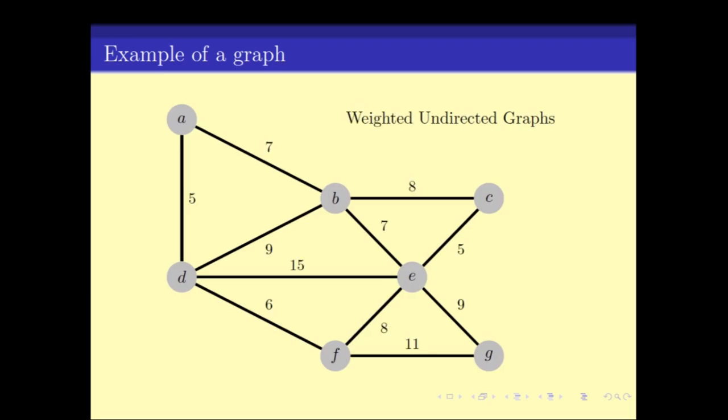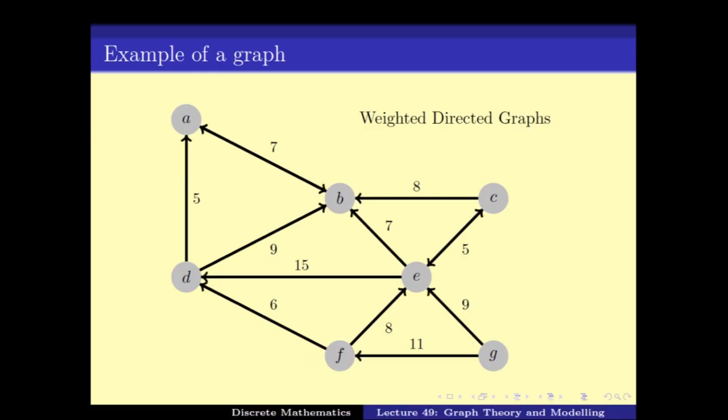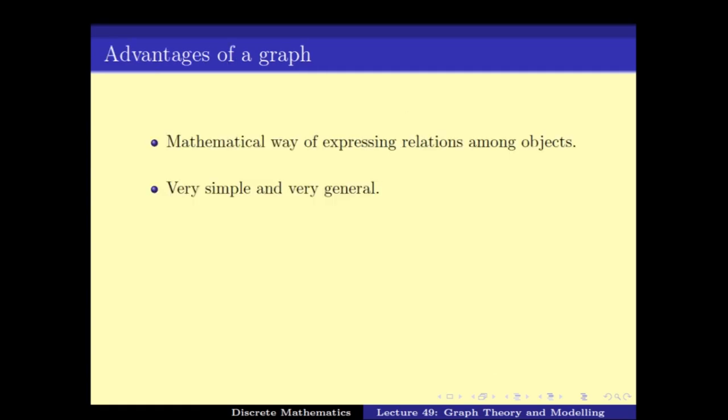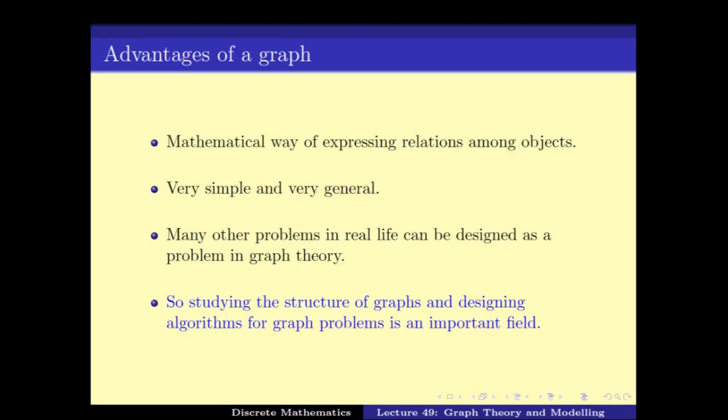We can have weights on the edges. We can also have direction on the edges if the original binary relation is not symmetric. The advantage of this graph is that it is a nice mathematical way of expressing relationships between objects. They are very simple and very general. We have seen that many problems in real life can be designed as a problem in graph theory. Hence, studying the structure of graphs and designing algorithms of graphs is an important field in the modern world of algorithms and complexity.